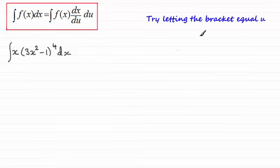What we do is we say let u equal 3x squared minus 1. And then we differentiate this with respect to x. So we get, therefore, du by dx equals 6x.